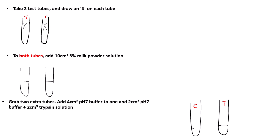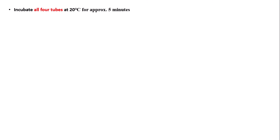You need to incubate all of the tubes at your chosen temperature — for example 20 degrees Celsius — for approximately five minutes. This is to get all the tubes to the same temperature so that your experiment is valid. You can use a water bath, or use water from the kettle mixed with cold tap water to reach 20 degrees, and incubate for five minutes.